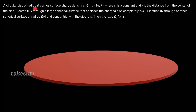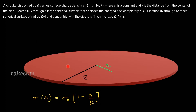A circular disk of radius capital R carries surface charge density sigma equals to sigma_0 into (1 minus r/R). This is a circular disk of radius R and the surface charge density on it is given by sigma = sigma_0 (1 - r/R), where sigma_0 is a constant and r is the distance from the center of the disk.